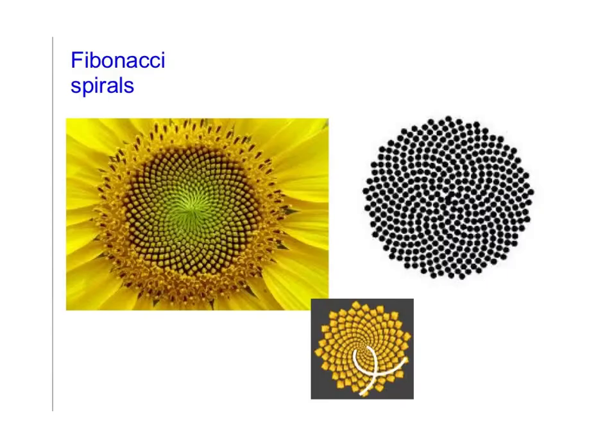Now, the numbers in the Fibonacci Sequence appear in nature, and one of these places that it appears is in the spirals formed by flowers. If you'll look here, you can kind of see that there are spirals,